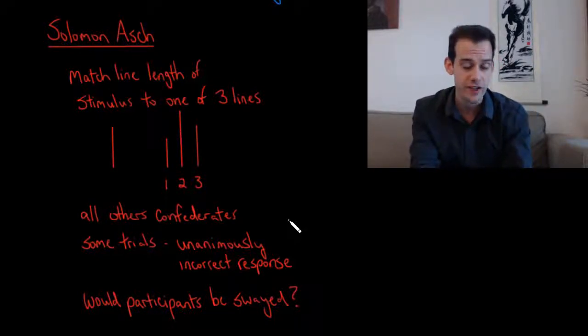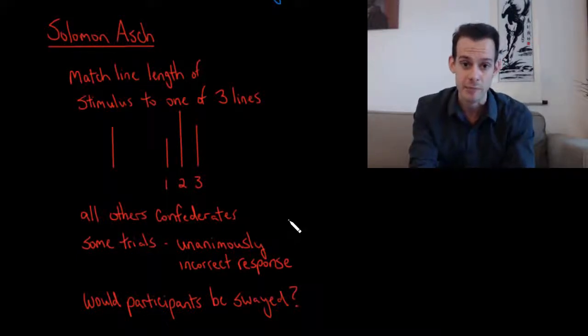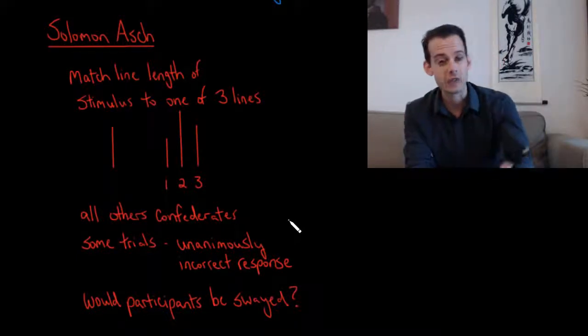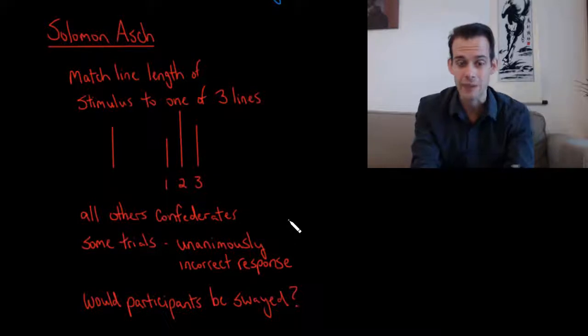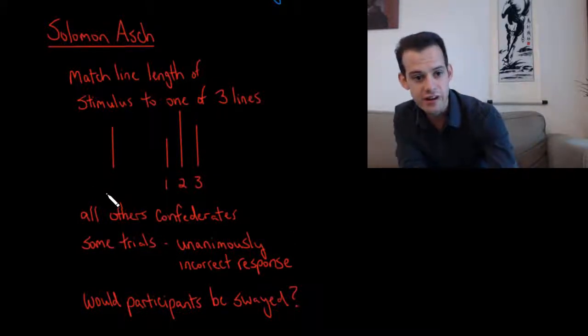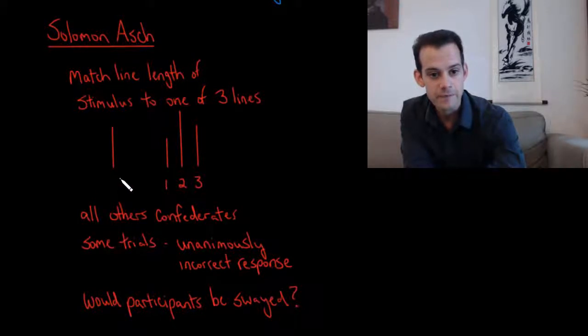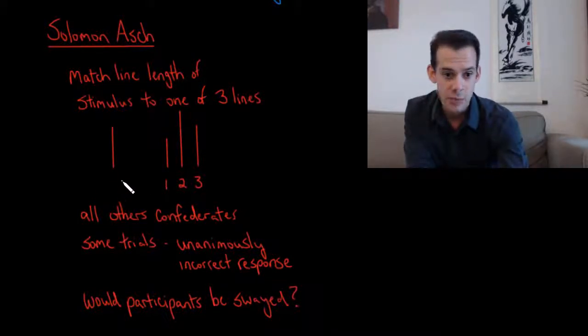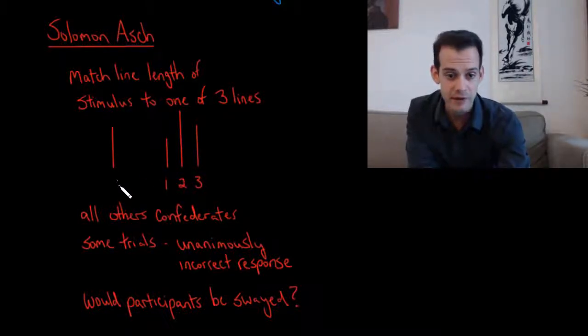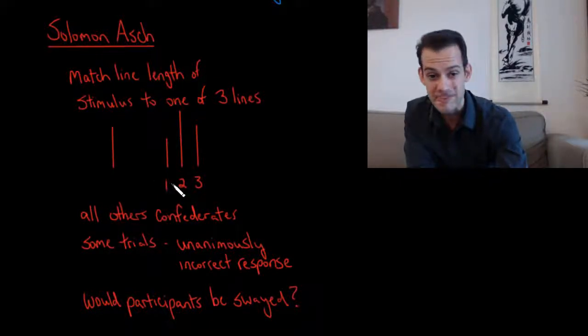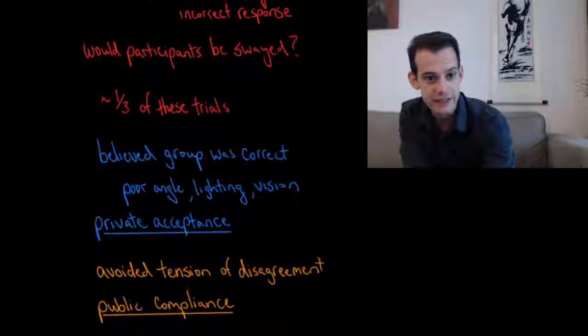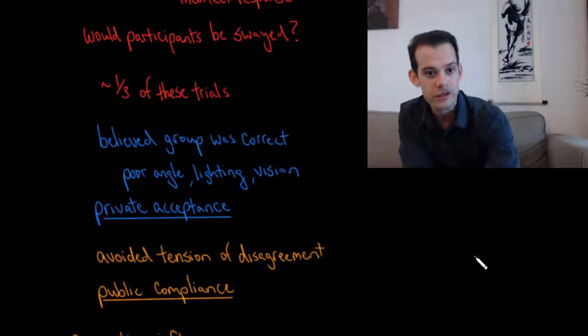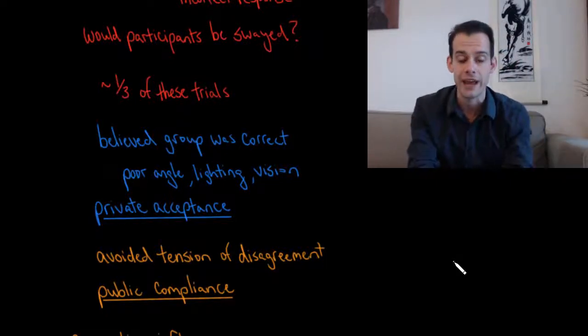And on some of the trials, all of these other confederates would unanimously give an incorrect response. And they would be saying their answers as we went along the table, and then it would get to the actual participant. And the question was, would the participants be swayed by hearing these incorrect responses? So in this case here, if this were the stimulus, then the other participants who were actually confederates might go around and say two, two, two. And then when it got to the participant's turn, Asch wondered, would the participant say two or would they say the correct answer of three? And what he found was on these trials where the confederates intentionally gave the wrong answers, about a third of the time, the participants also gave this incorrect response.